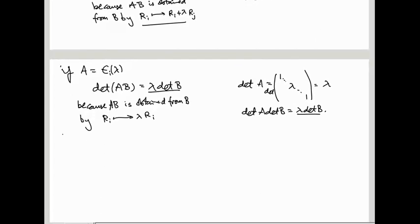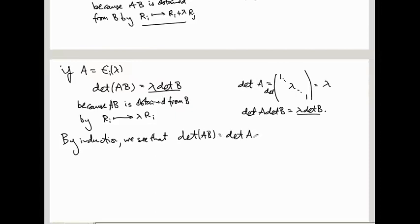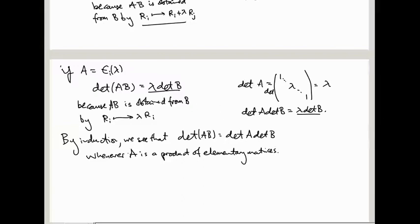By induction, we see that det(AB) = det(A) det(B) whenever A is a product of elementary matrices. Just applying the same argument and pulling off each elementary matrix one at a time, we get this formula when A is a product of elementary matrices. And from our earlier work on invertible matrices, this is true if and only if A is invertible. So we've proved the formula for any invertible matrix A.